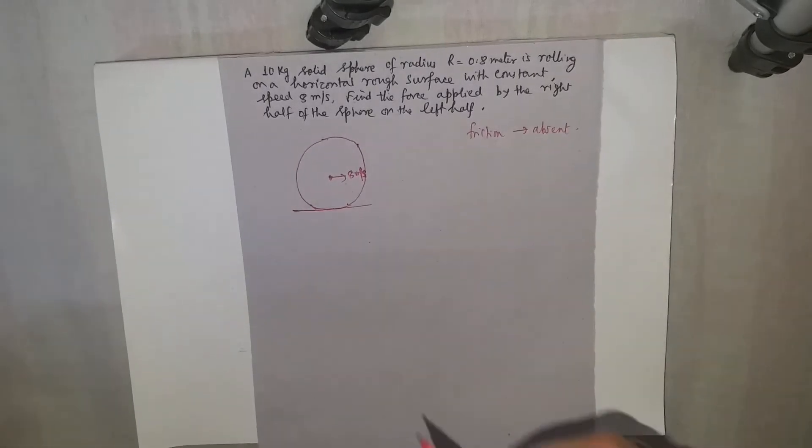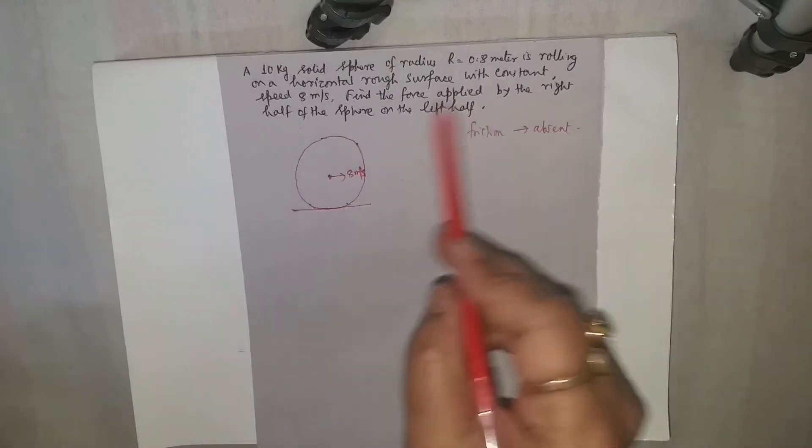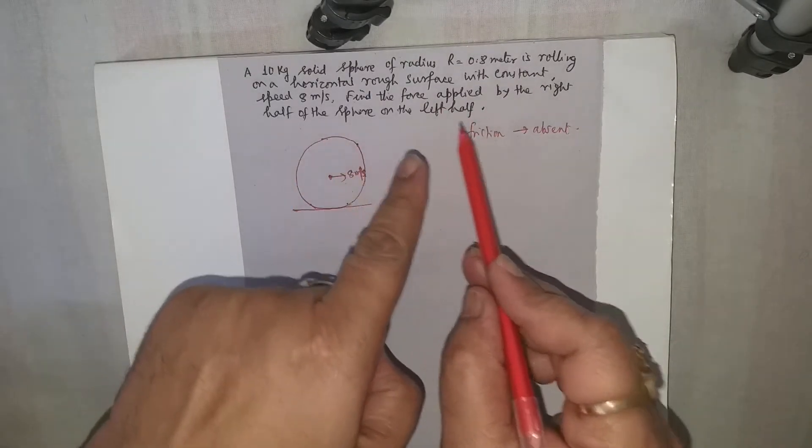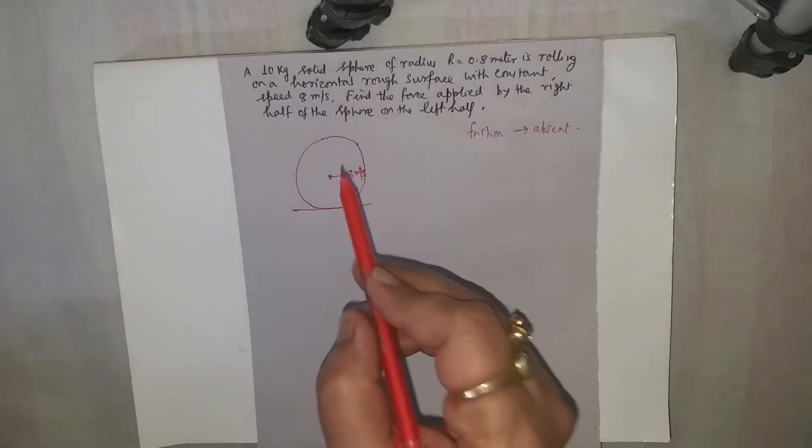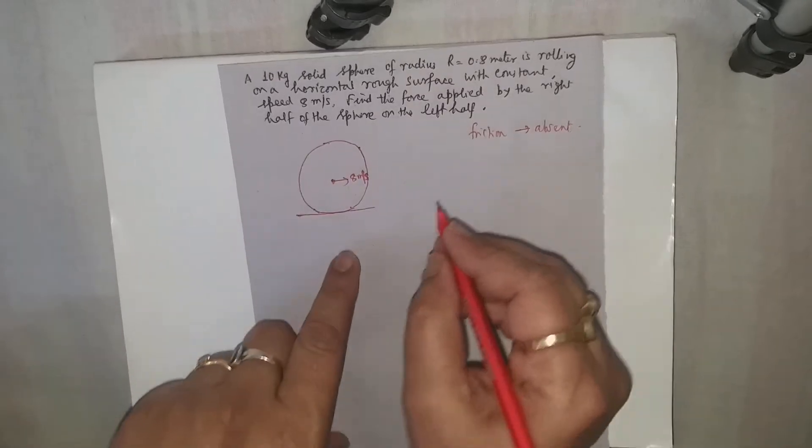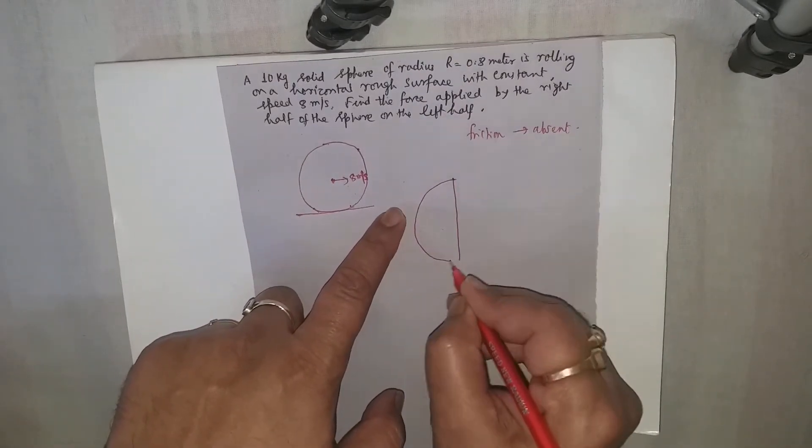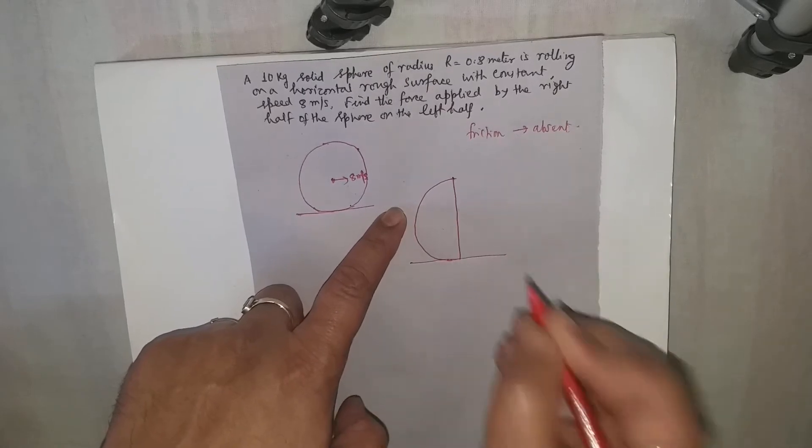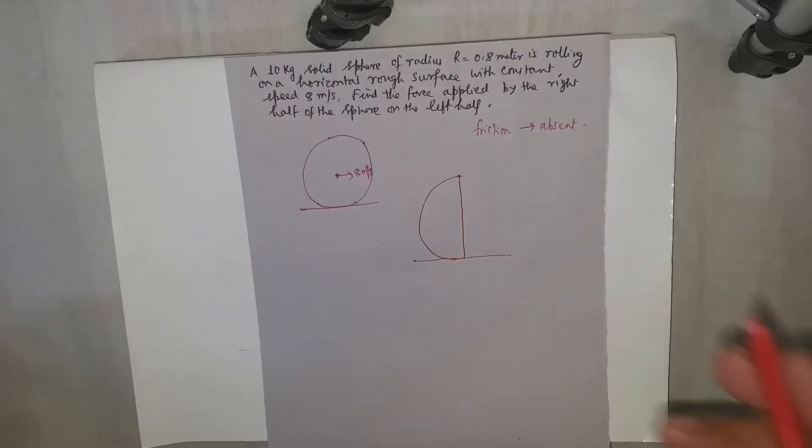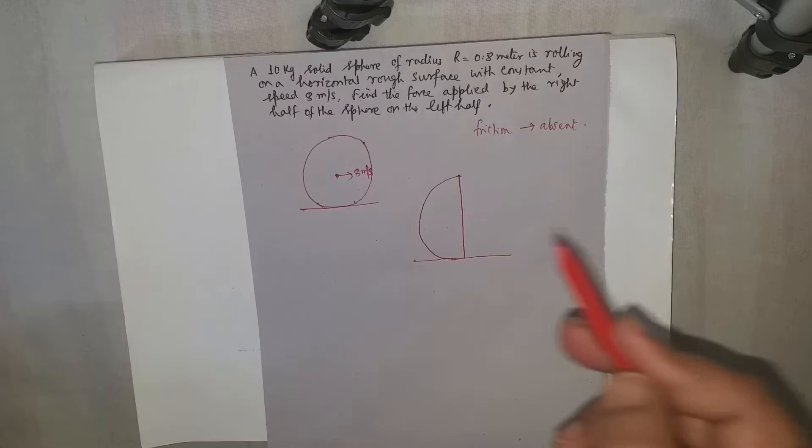Now let's see what they are asking. Find the force applied by the right half of the sphere on the left half. That is, let us see that this is the left half of the sphere, and in the course of pure rolling, how much force is applied by the right part on this left part.